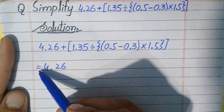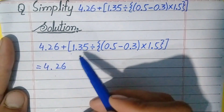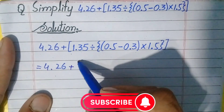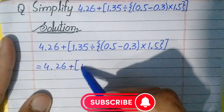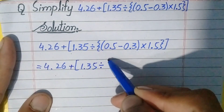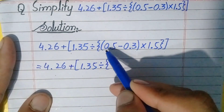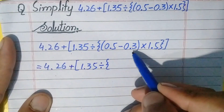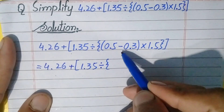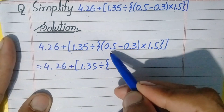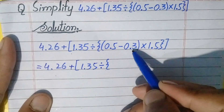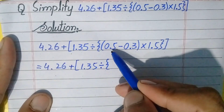Write down the equality in the second step and write down the remaining question the same. So 4.26 plus, square brackets open, 1.35 divide, braces open. First of all we will simplify the number inside the parenthesis. The number inside the parenthesis is the subtraction of 0.5 minus 0.3.